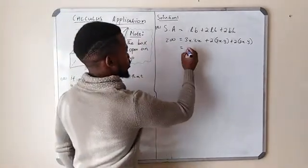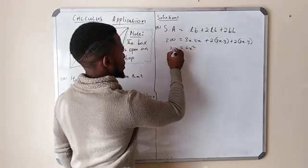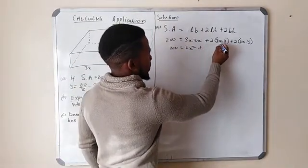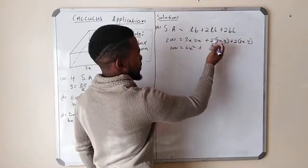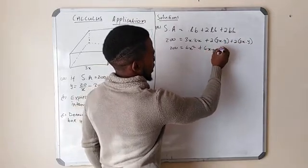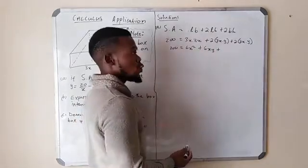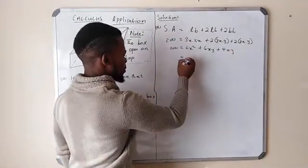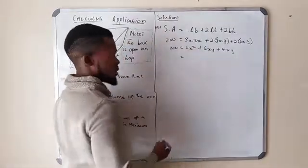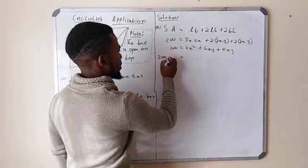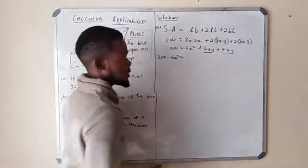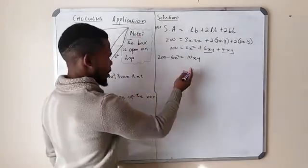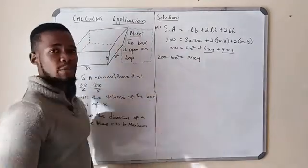We have 3x × 2x which gives 6x². On the right side, 2(3x × y) = 6xy, and 2(2x × y) = 4xy. So the equation becomes: 200 = 6x² + 6xy + 4xy. To make y the subject, we transpose 6x² to the left: 200 − 6x² = 10xy, since 6xy + 4xy = 10xy.